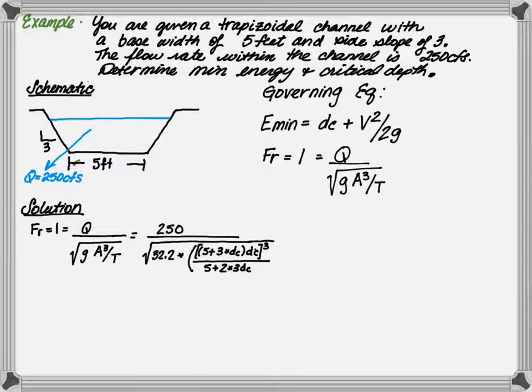First, we're going to solve for the critical depth by setting the Froude number equal to 1 and plugging in the necessary equations. So we have 250 CFS divided by the square root of gravity, 32.2, times the area cubed. And in this case, the area has the base width of 5, the side slopes of 3, and the unknown quantity of the critical depth, divided by the base width of 5 plus 2 times 3 times the critical depth.